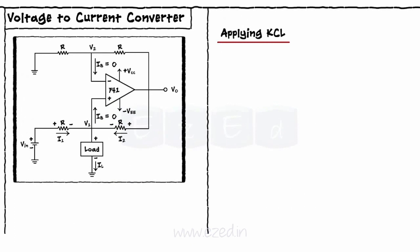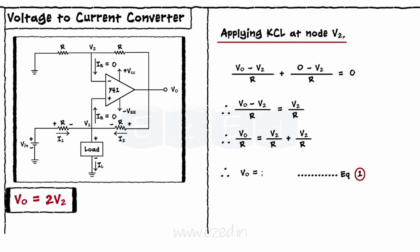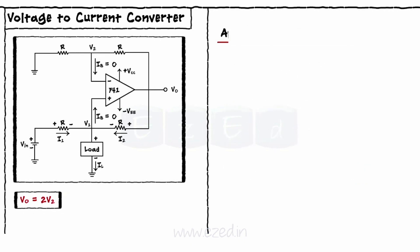Applying KCL at node V2, Vout minus V2 upon R plus 0 minus V2 upon R equals 0. Therefore, Vout minus V2 upon R equals V2 upon R. Rearranging the terms, we get the first equation as Vout equal to 2 into V2.